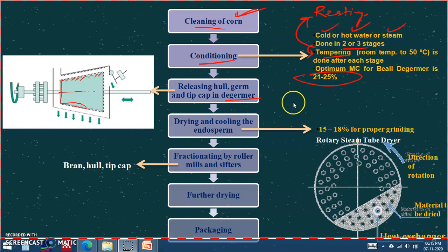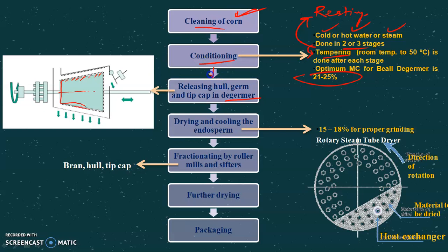These conditioned grains are then taken to the de-germing section. The purpose of de-germing is to remove the hull, tip cap, and germ as far as practicable, and to leave the fine endosperm in large grits. However, the products from the de-germa consist of a mixture of kernel components freed from each other to varying degrees, with the endosperm particles varying in size from grits to flour.